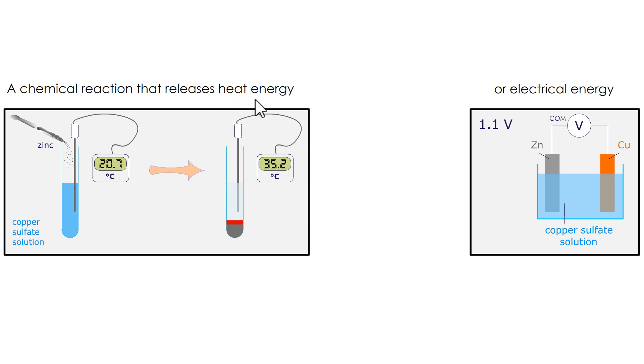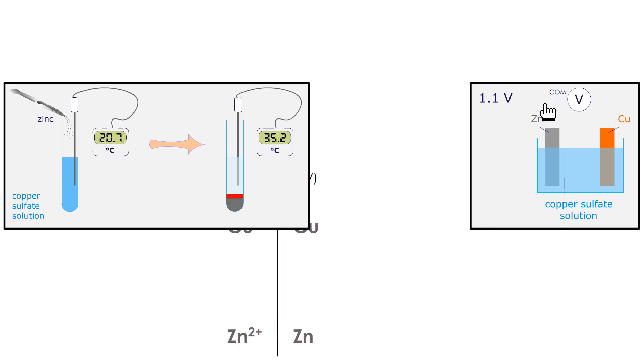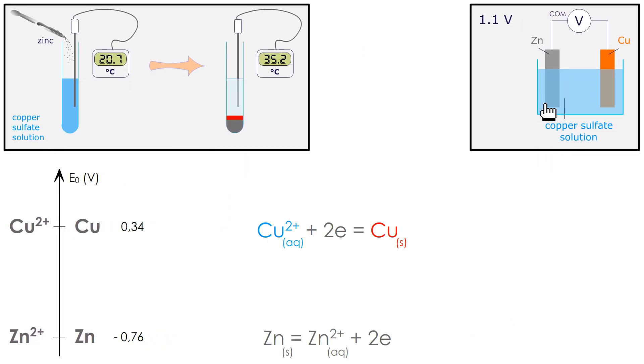We will rather focus on what happens on the right, when chemical energy is converted into electrical energy. Here, by placing a voltmeter with the common terminal on the zinc, it displays a positive voltage of 1.1 volts.